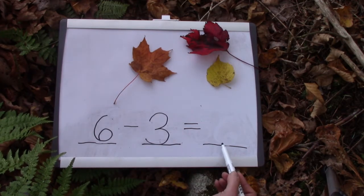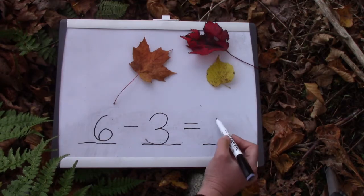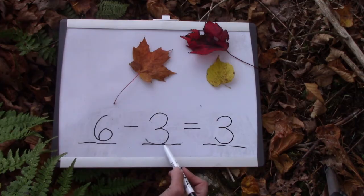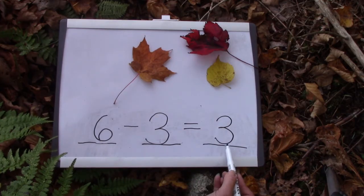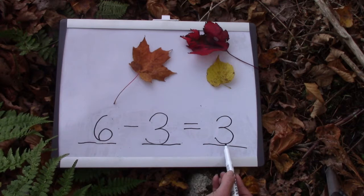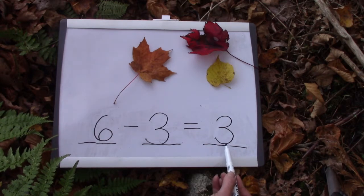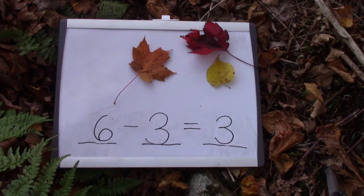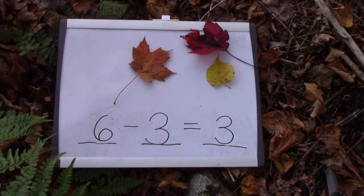How many are left? That's right, it's three. Six take away three equals three. That looks a little bit like one of our doubles facts. Three plus three equals six. So when you take three away, there'll be three left.